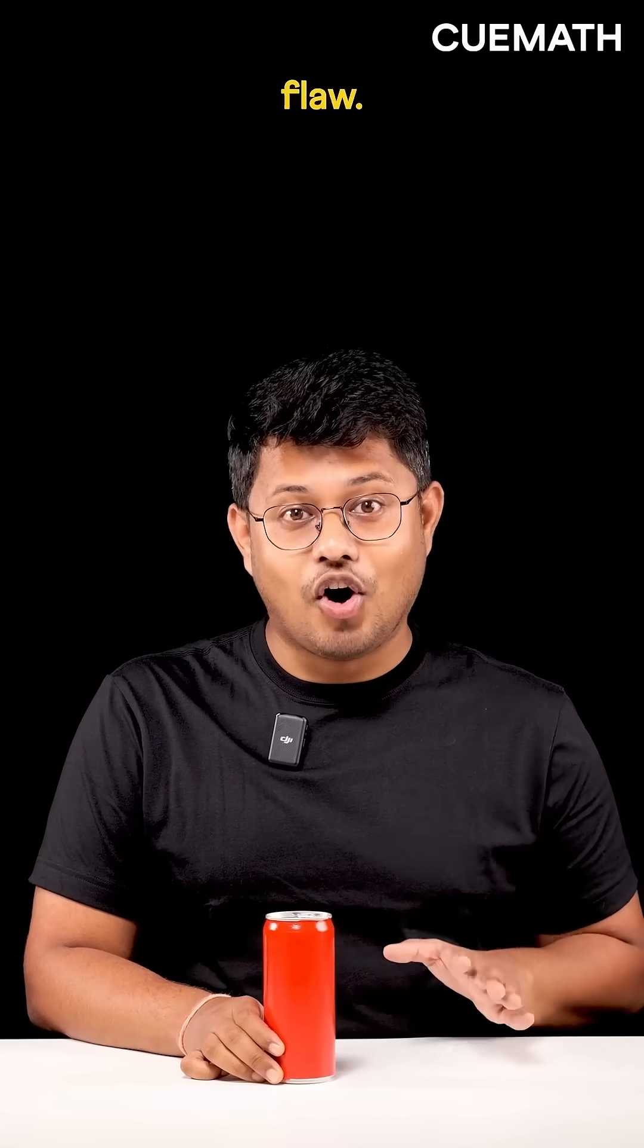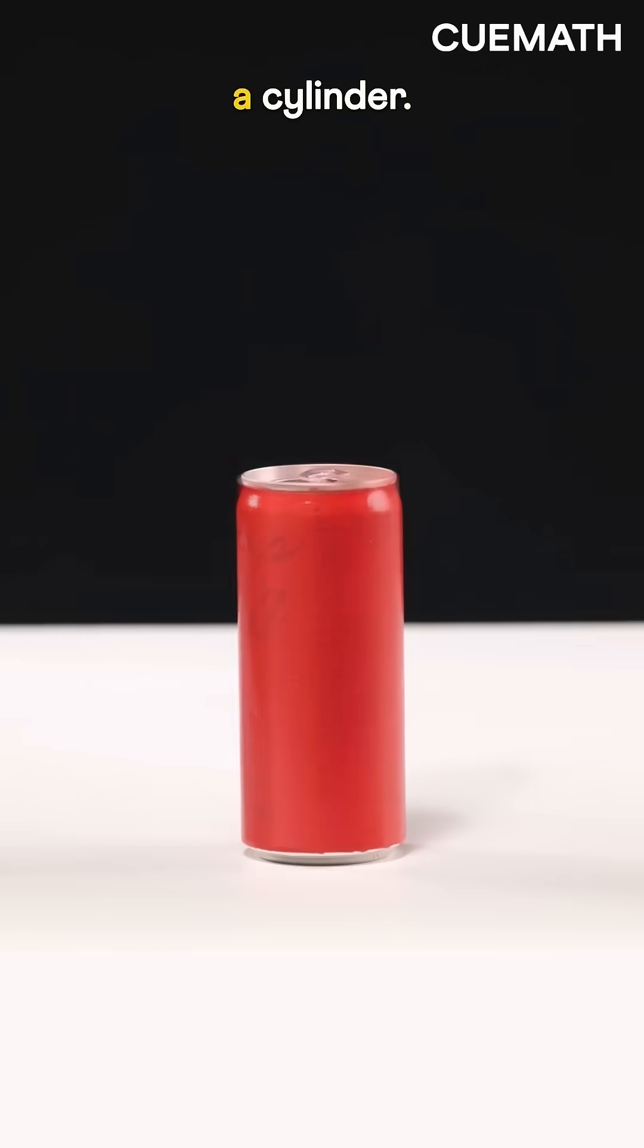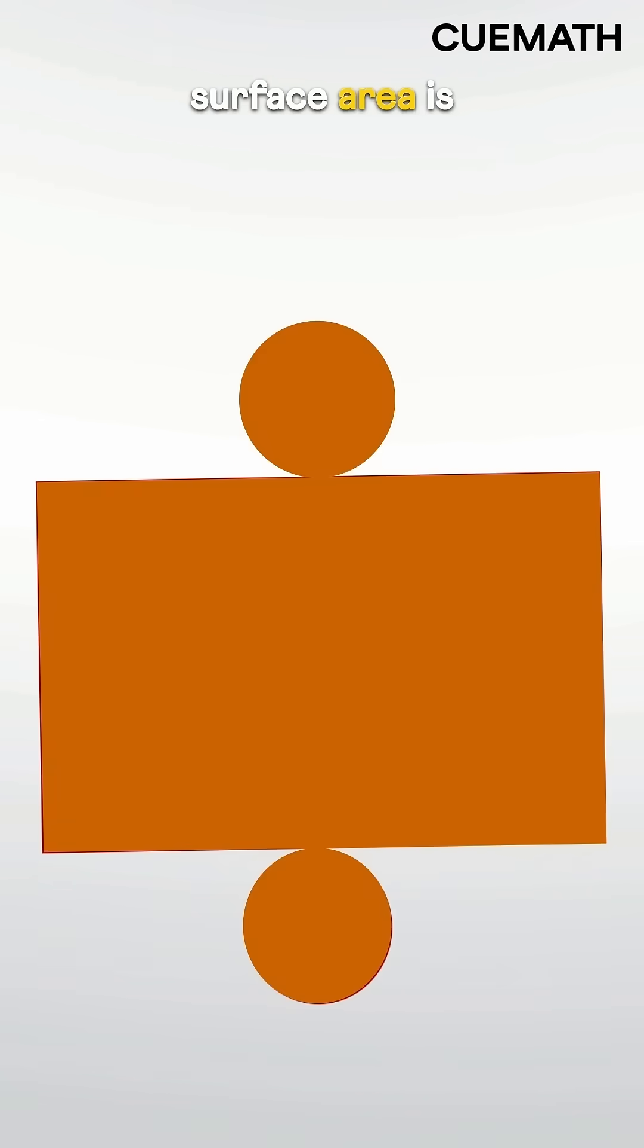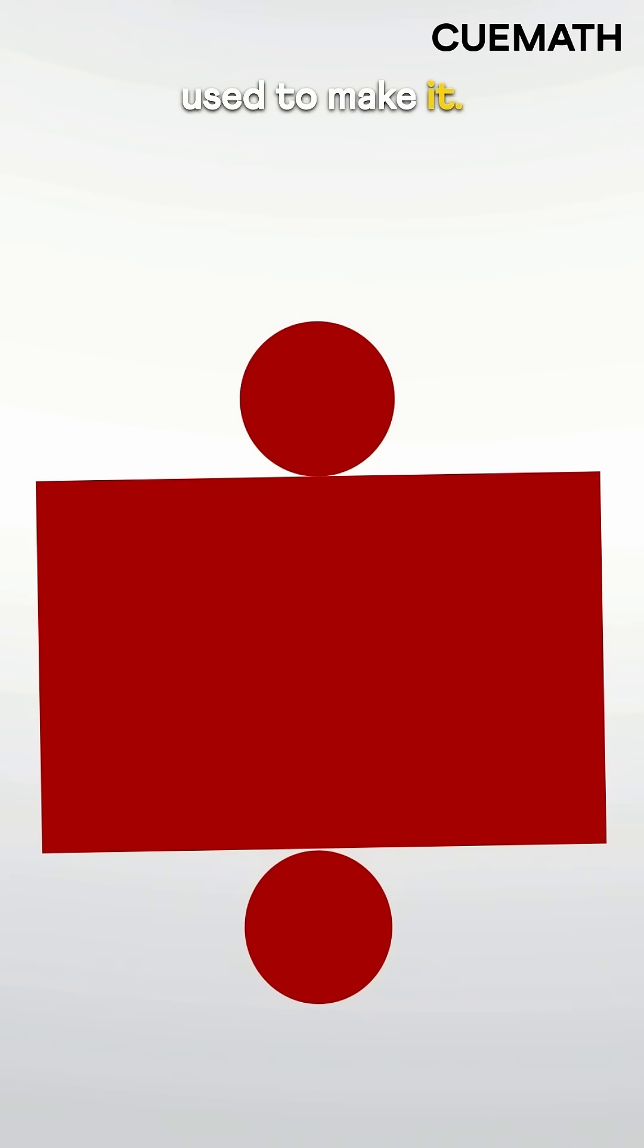Your soda can has a mathematical flaw. Here is why. A can is a cylinder. Its volume is the amount of liquid it can hold, and its surface area is the area of the material used to make it.